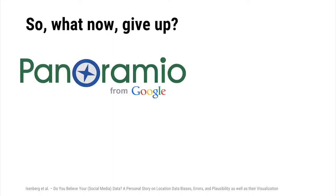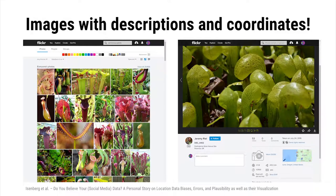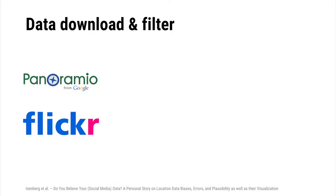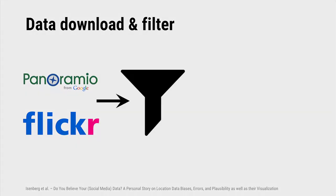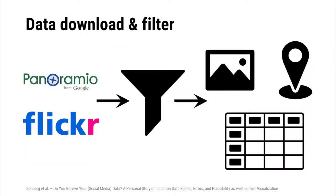So what now — give up? This researcher looked at image sharing sites such as Panoramio, which isn't around anymore, and more recently Flickr. These sites not only allow image sharing but sometimes also include information about what's depicted and even where the picture was taken. He uses the APIs from these sites, searches for relevant images, and downloads the data. This data is then filtered: we select images with GPS data and filter out fake carnivorous plants, those in botanical gardens, and plants kept at home.